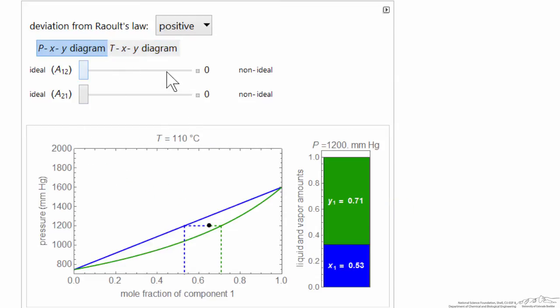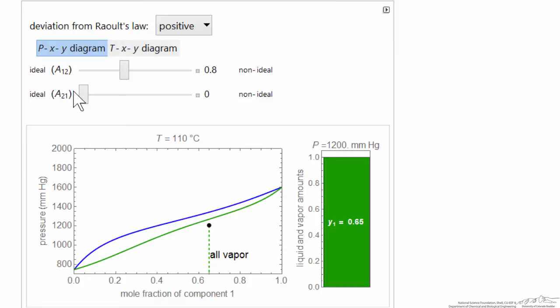If I look at the PXY diagram and I increase the value of these parameters, I get positive deviations from Raoult's law when the parameters are positive, and the activity coefficients are greater than one.